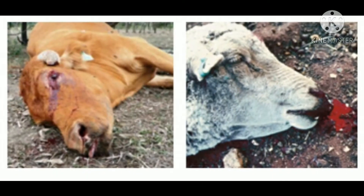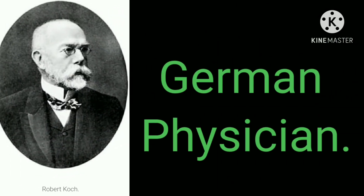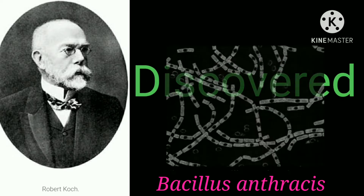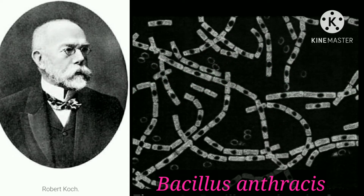Pasteur wanted to apply the principle of vaccination to anthrax. Meanwhile, German physician Robert Koch was busy with the anthrax problem in Germany. It was Robert Koch who discovered the typical bacilli with squarish ends in the blood of cattle that had died of anthrax.